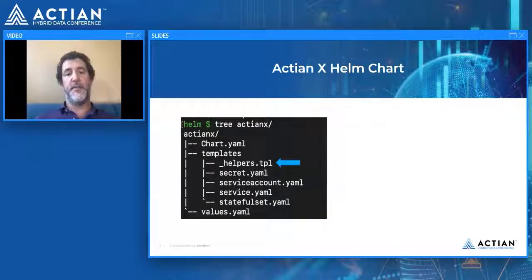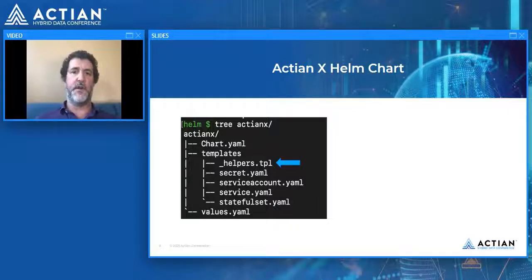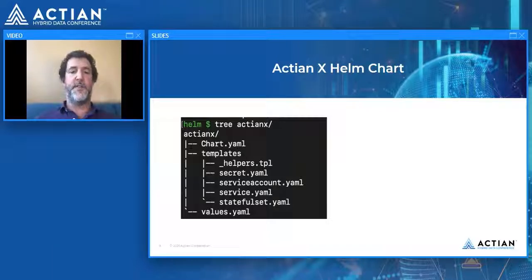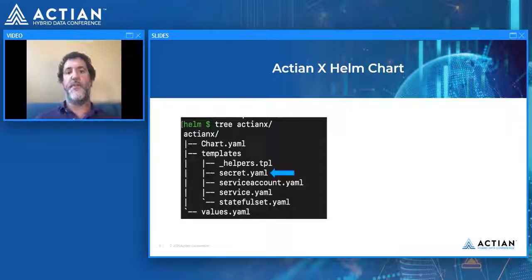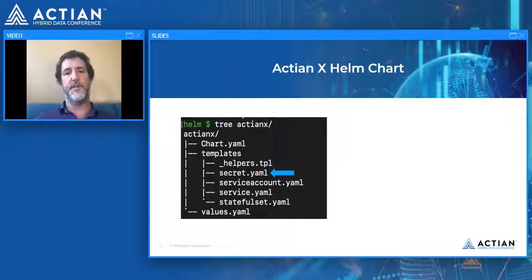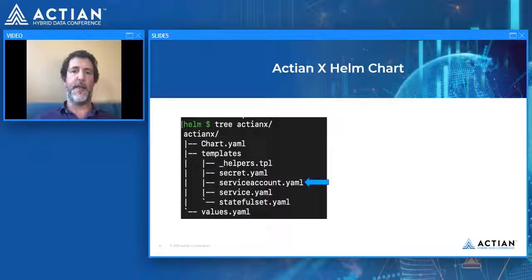Under that there's a templates directory with a number of files. First, the helpers template, which contains macros used to generate derived information from anything already declared in the chart — useful for populating the other YAML files. There's also a secrets file: Secrets is how Kubernetes manages sensitive information, and the chart will create a secret for you if you pass in a password during instantiation. The service account gives essentially a user for the deployment to which you can allocate permissions for anything the application might need to do.